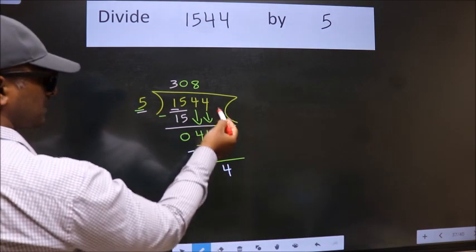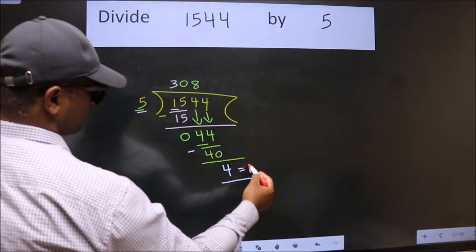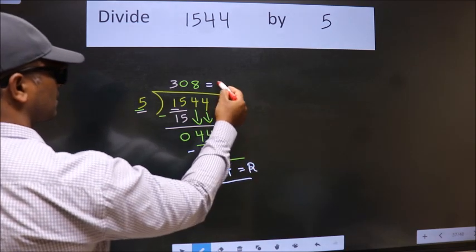No more numbers to bring down. So we stop here. This is our remainder. This is our quotient.